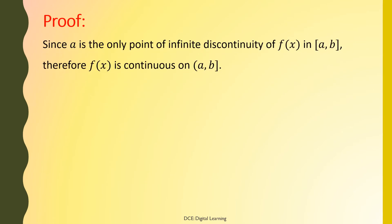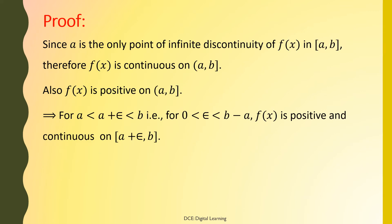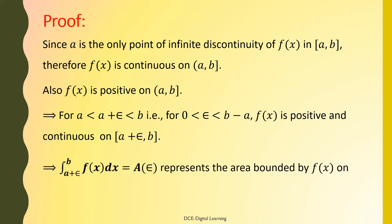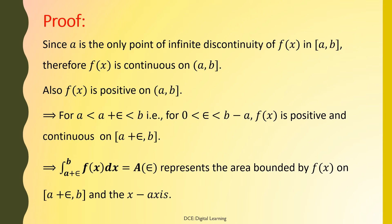Proof. Since a is the only point of infinite discontinuity of f(x) in the closed interval [a, b], f(x) is continuous on the semi-closed interval (a, b]. Also, f(x) is positive on (a, b], which implies for a < a+epsilon < b, that is for 0 < epsilon < b−a, f(x) is positive and continuous on the closed interval [a+epsilon, b]. This implies the integral of f(x) dx from a+epsilon to b equals A(epsilon), representing the area bounded by f(x) on [a+epsilon, b] and the x-axis.